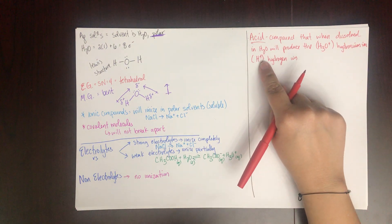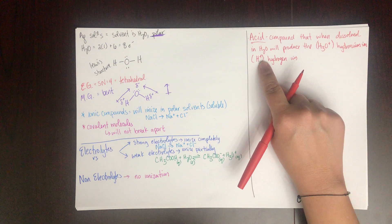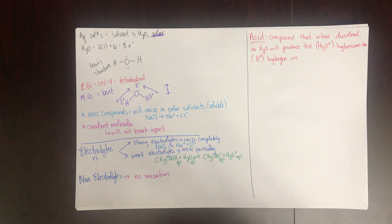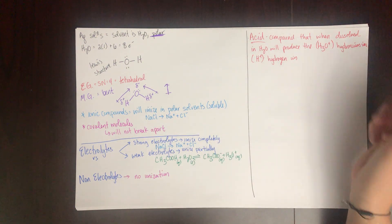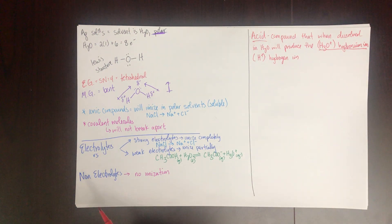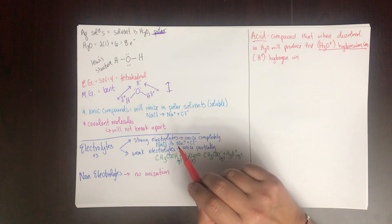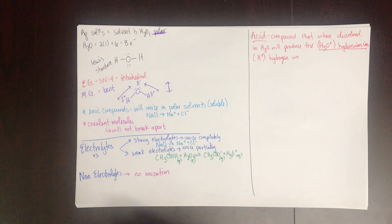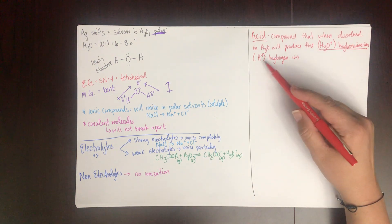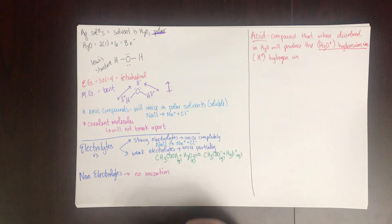The hydrogen ion (H⁺) doesn't really exist freely in water — if you put H⁺ in water, it joins an H₂O molecule to form H₃O⁺. So both representations are correct, but in chemistry it makes more sense to talk about the hydronium ion, H₃O⁺. That's what we'll use, though it's the same concept you may have learned in biology.